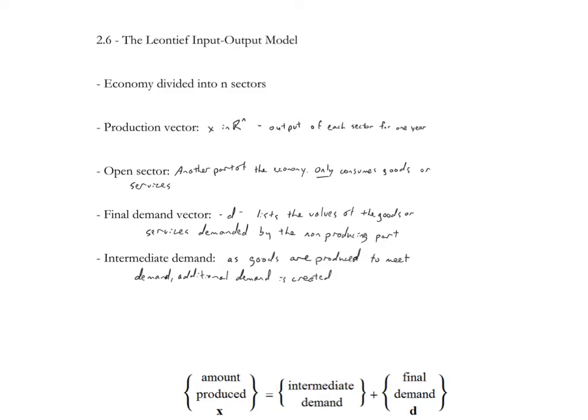We define a production vector as some vector X in R^N that is the output of each sector for one year. An open sector is another part of the economy, not one of these sectors, but it's one that only consumes goods or services. We define a final demand vector, we're going to use a D for that. That lists the values of the goods or services demanded by the non-producing part.